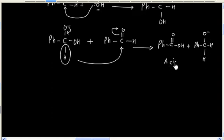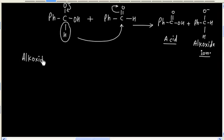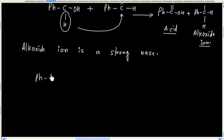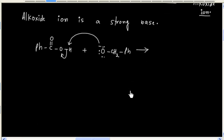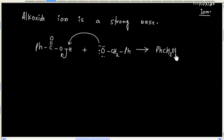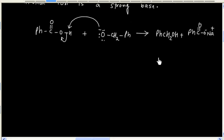And finally we will have acid and alkoxide ion as product. Alkoxide ion is a strong base. So we will have acid-base reaction. Alkoxide ion will abstract a proton and it will form alcohol and sodium salt of acid. So final product is alcohol and sodium salt of acid.